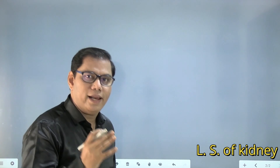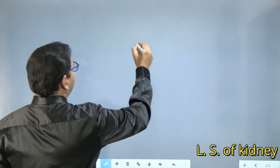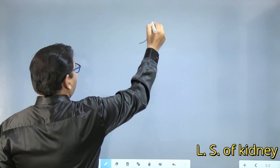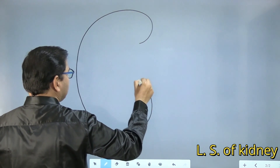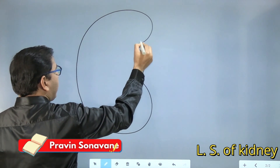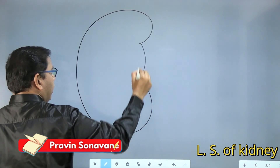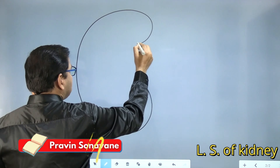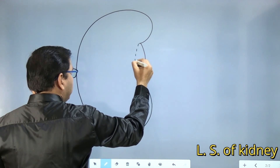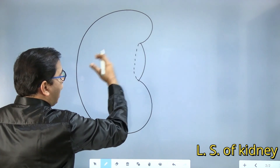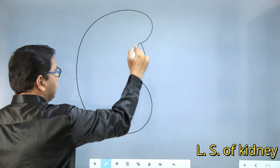I'm sure this diagram you are going to find very easy. First of all, in the LS of kidney we are going to draw an English letter C, something like this, and then we will join it. This C-like shape — and then join this. This is a special part; through this special part there are some arteries, veins and things coming in and out of this kidney, so this part is very important.